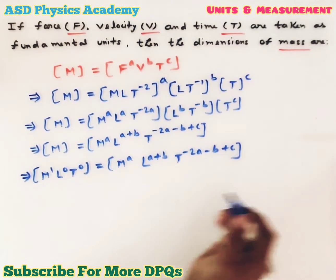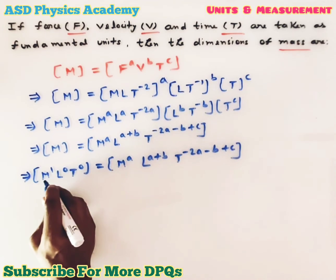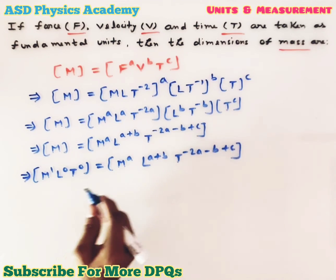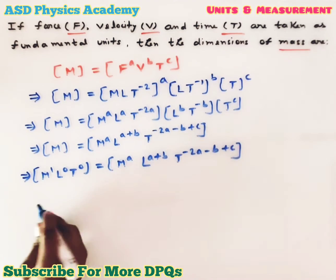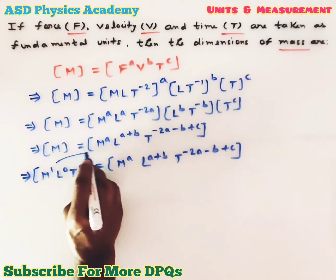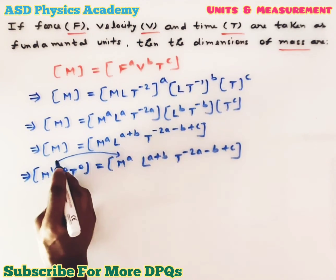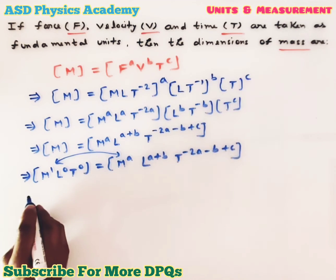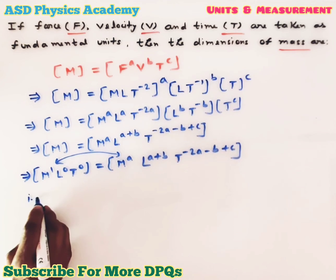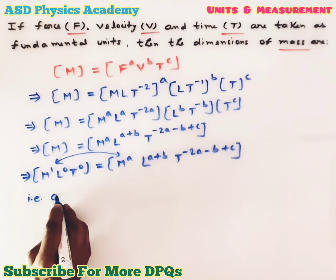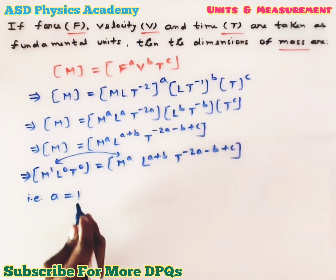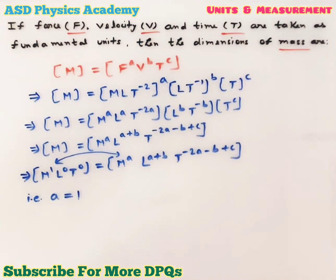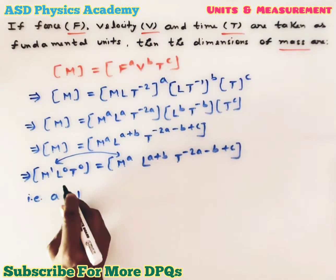Now we compare the powers of M: on the left M to the power 1, on the right M to the power A. Comparing these gives us A = 1.